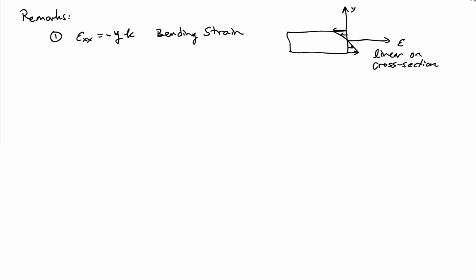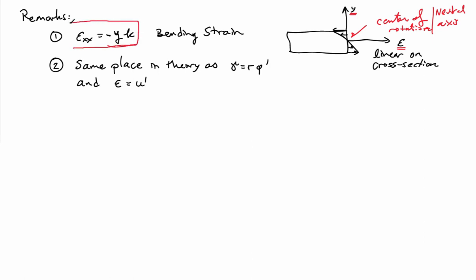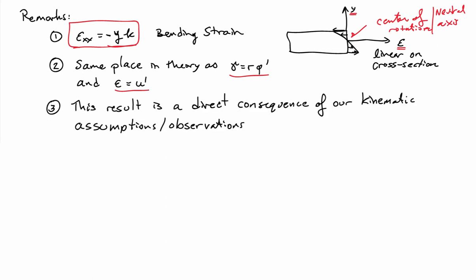As a function of y, the bending strains are a linear function. Plotting the bending strain on the cross-section as a function of y shows a linear variation that passes through zero at the center of rotation, which is also known as the neutral axis. This relationship epsilon equals minus y kappa occupies the same fundamental place in bending theory as gamma equals r d-phi-dz in torsion, or epsilon equals u-prime in axial deformation — it is a direct consequence of our kinematic assumptions.